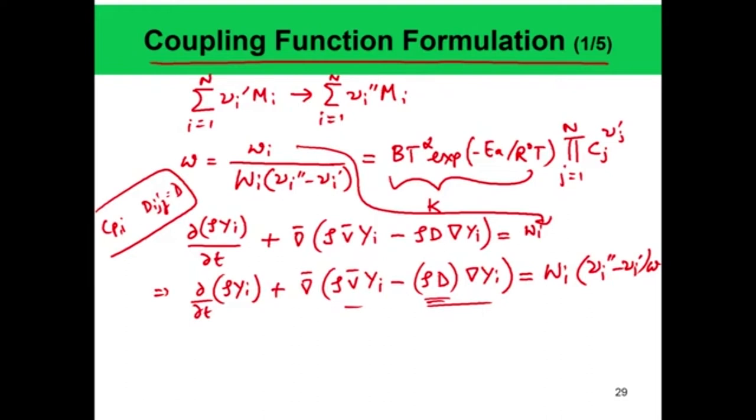This is the convection term, and this is the species diffusion term — you see the characteristic diffusivity rho*D appears. The right-hand side is the molecular weight of species i times (nu_i'' minus nu_i') times the species-independent reaction rate omega. Now, we can define a stoichiometrically weighted mass fraction. We will use non-dimensional parameters because they will make our analysis much simpler, though it may look a little complicated initially.